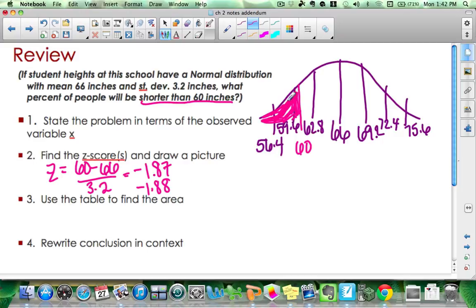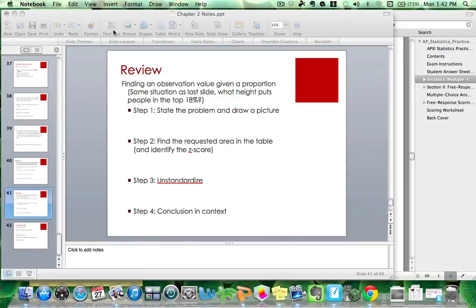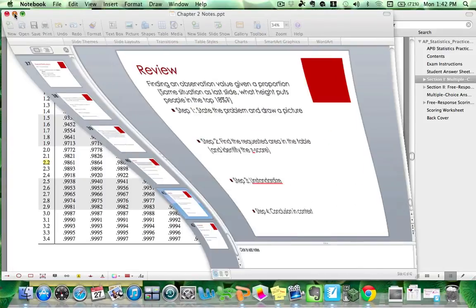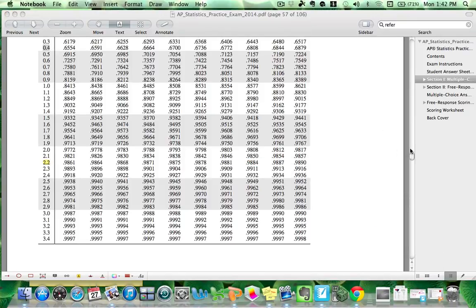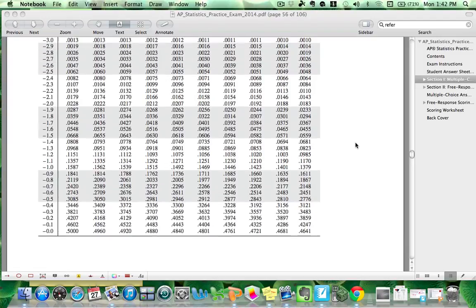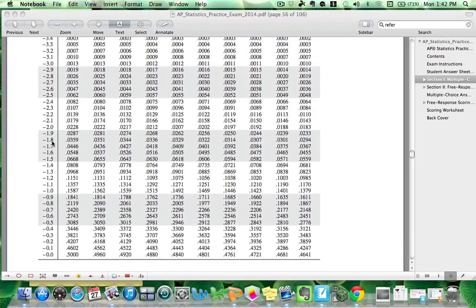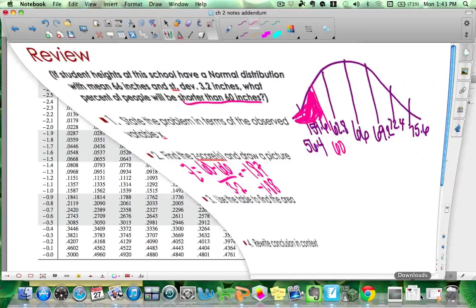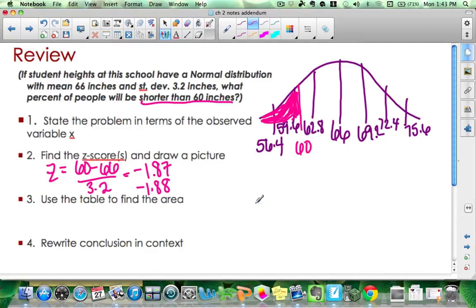I've shaded to the left, so looking this up should be pretty simple. Whatever I look up is the correct answer. So I'm going to the negative z-score side, negative 1.87 or negative 1.88. Here's my negative 1.8 row. And I'm at either 0.0307 or 0.0301, depending on what you did.